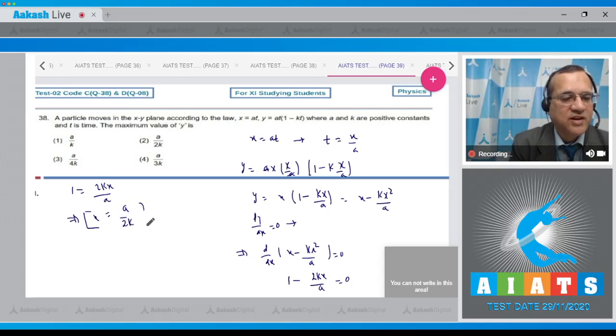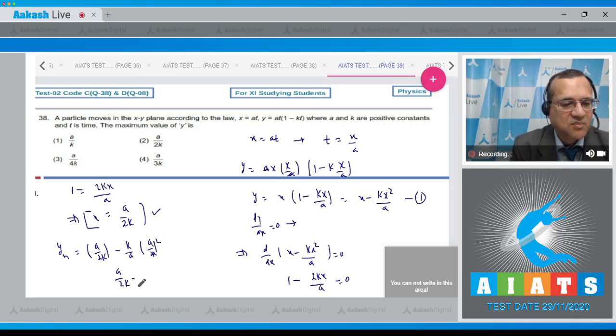And to get the maximum value of y, I will fill this x in this equation. Therefore, y the maximum value becomes equal to a by 2 k minus a by 2 k. Cancel out and this is a by 2 k minus a by 4 k. Then y maximum is equal to a by 4 k, and therefore the correct option is answer 3.